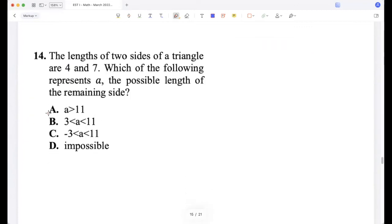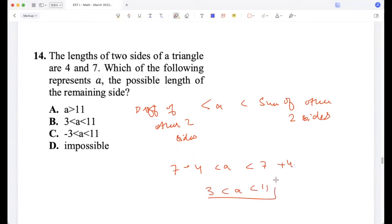The length of two sides of a triangle are 4 and 7. What are the possible values of the third side? So any third side of a triangle should be greater than the difference of the other two sides and should be less than the sum of the other two sides. So 7 minus 4 should be less than a should be less than 7 plus 4. So a should be between 3 and 11.